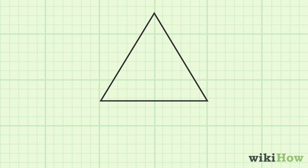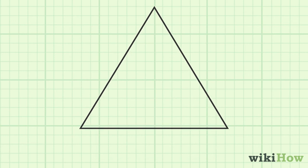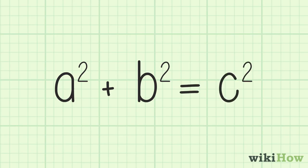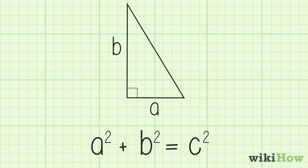If you only know the length of two of the triangle's sides, you can still find the perimeter if it's a right triangle, which means the triangle has one 90-degree angle. Just use the Pythagorean theorem, which is A squared plus B squared equals C squared, where A and B are the lengths of the known sides, and C is the length of the unknown hypotenuse.